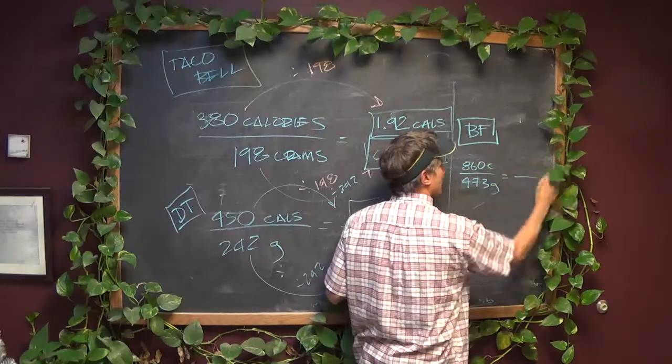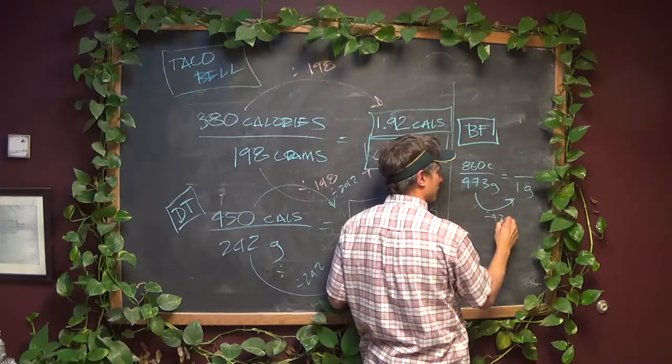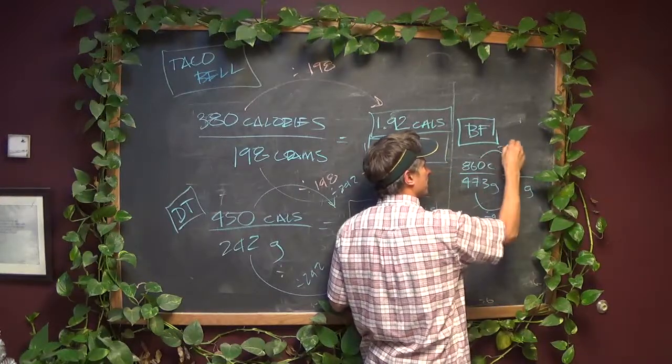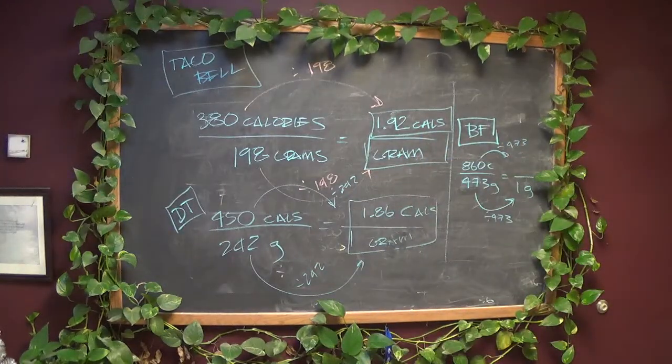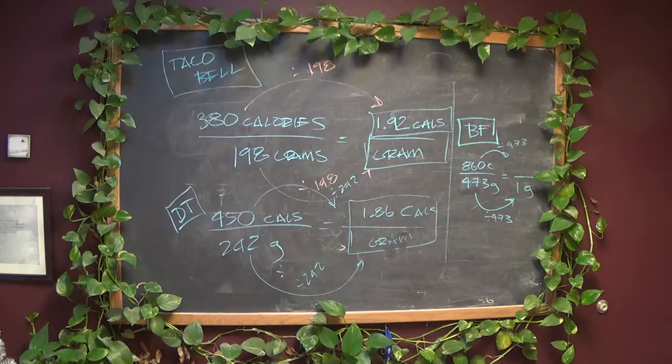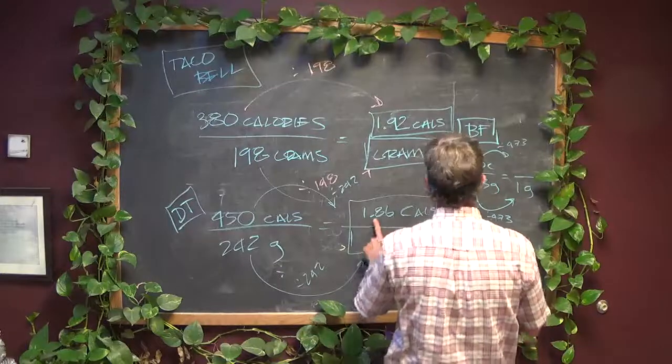With Baja Fresh, it's got 860 calories per 473 grams. We've got to get this down to one gram. Divide by 473. We do 860 divided by 473, at 1.82, which is again less.